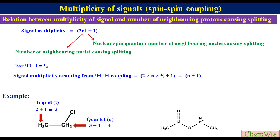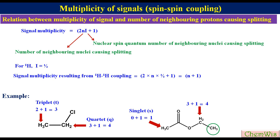Let's take the example of ethyl acetate. The acetyl CH₃ is attached to the carbonyl carbon having no hydrogen, so the multiplicity of the signal will be 0 + 1 = 1, meaning it will appear as a singlet. The CH₂ group is attached to the CH₃ that has three protons, so the multiplicity of the CH₂ signal will be 3 + 1 = 4, meaning it will appear as a quartet. CH₃ is attached to CH₂, so its multiplicity will be 2 + 1 = 3, meaning it will appear as a triplet.